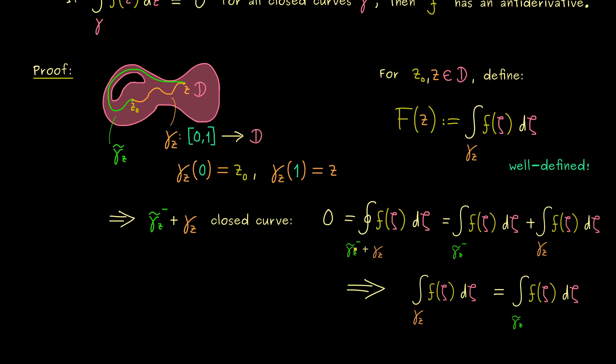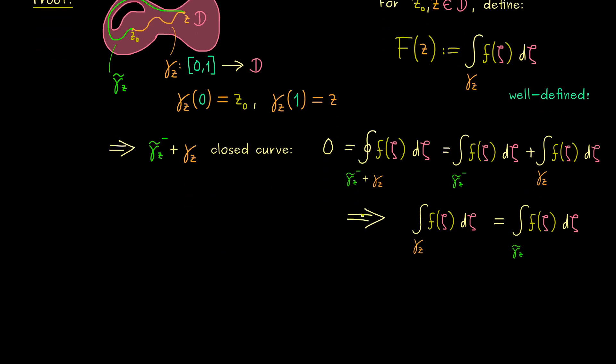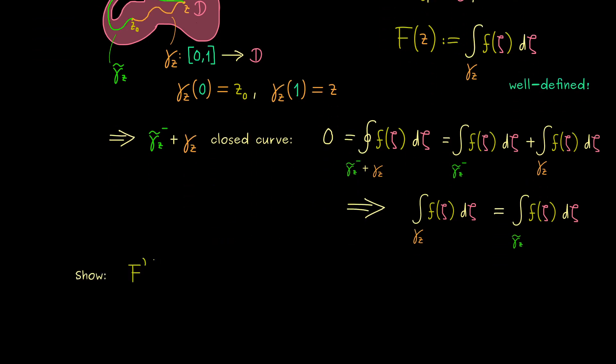Now we can definitely say that the function capital F is well defined. And with this, only one thing remains to show, that capital F is indeed an antiderivative of lowercase f. In other words, now we want to show capital F' is exactly f. And indeed, now this part gets a little bit more technical. Now here, please recall, the complex derivative is a point-wise property. Hence it's sufficient to consider our point Z as before.